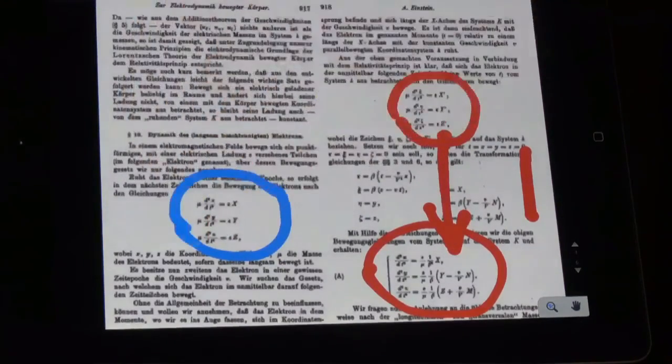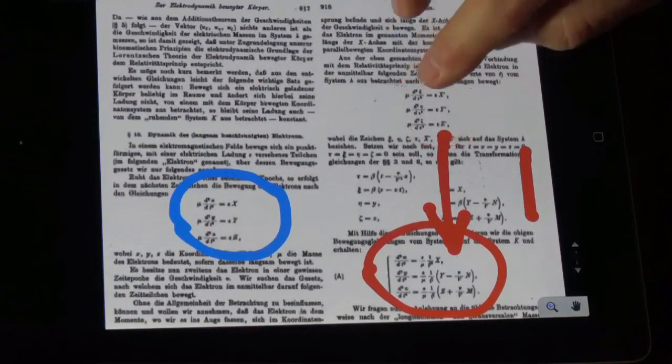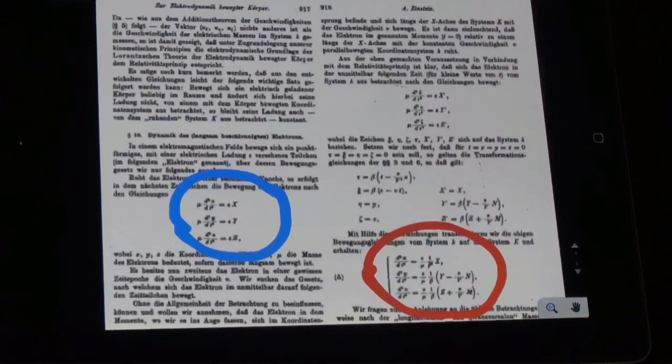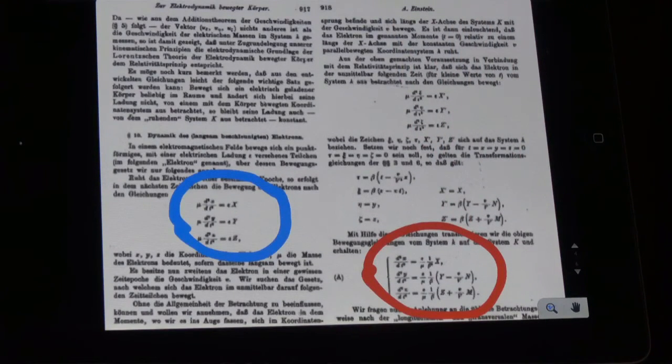It's an indisputable absolute truth that a body in the stationary system cannot obey at the same time two completely different laws of motion and therefore Einstein's relativity fails fatally right at this point prior to any further attempts to justify it, experimentally or otherwise.